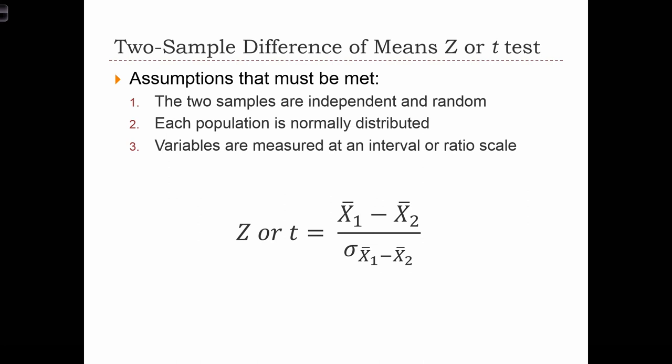The first assumption is that the two samples are independent. Also, the samples have to be randomly drawn, so a probabilistic sampling procedure must have taken place. The second assumption is that each of the populations that the data are drawn from are normally distributed. And third, the variables need to be measured at an interval or ratio scale.